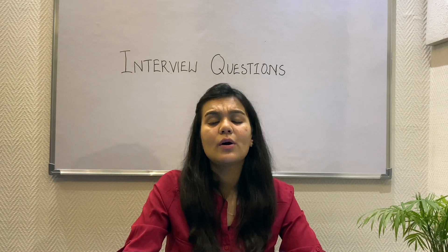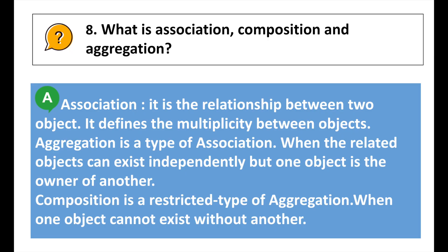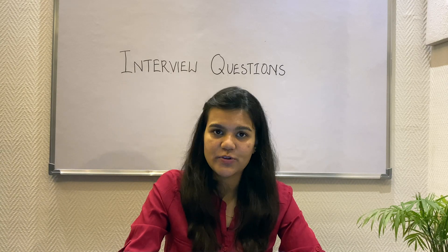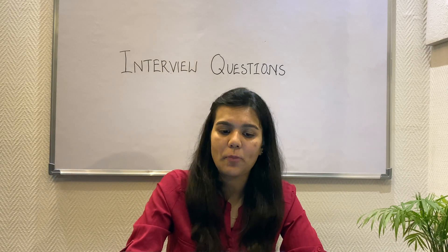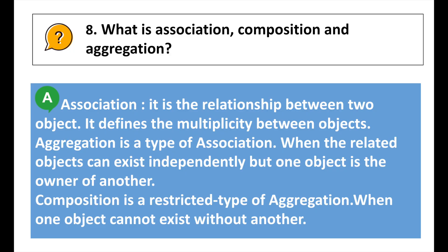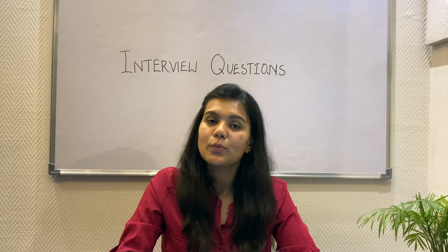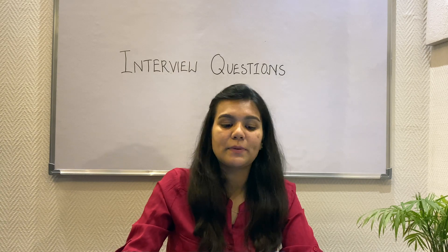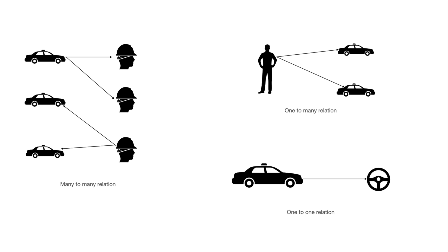The next question is: What is association, composition, and aggregation? Association is the relationship between two objects and defines the multiplicity between them. Aggregation is a type of association where the related objects can exist independently but one object is the owner of the other. Composition is a restricted type of aggregation where one object cannot exist without another. Example of association: a mechanic can fix multiple cars and a car can be fixed by multiple mechanics — both exist independently.